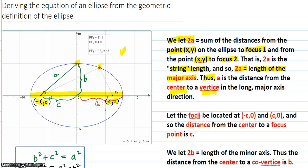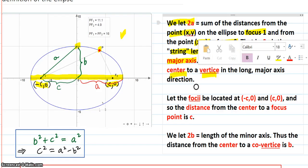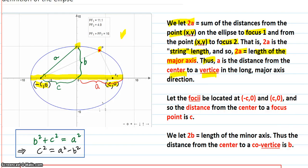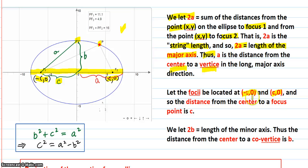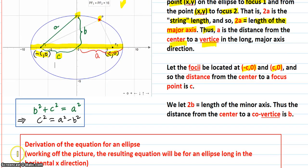We also know that c is defined as the distance from the center to a focus. So the foci are located at negative c, 0 and c, 0, and c is the distance from the center to each focus point. Additionally, 2b is the length of the minor axis — the distance all the way across the short axis. So b is the distance from the center to a co-vertex in the short direction.